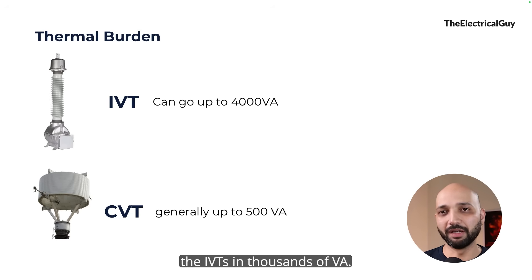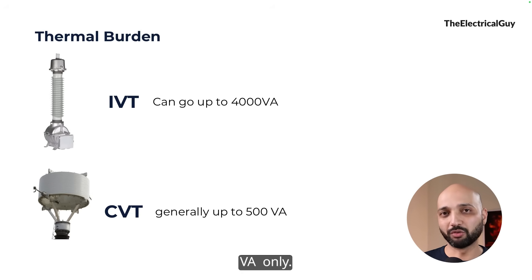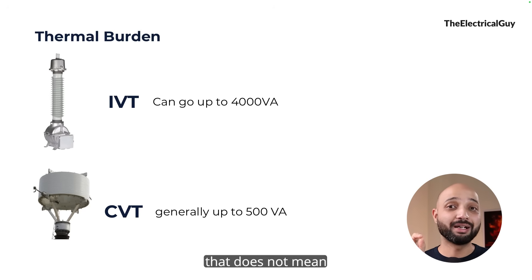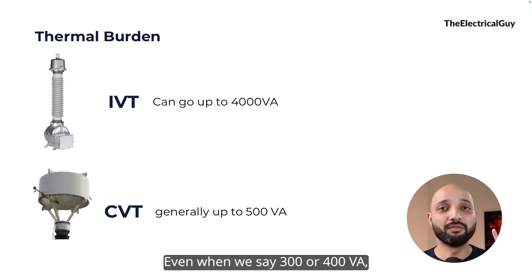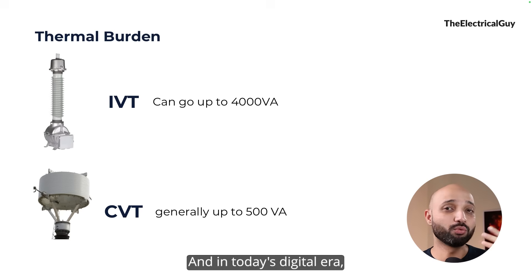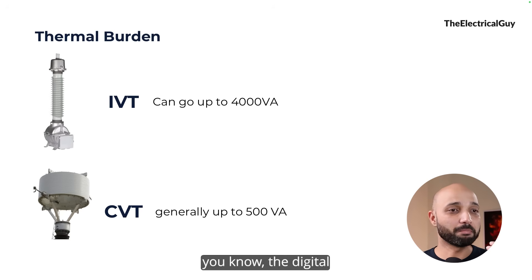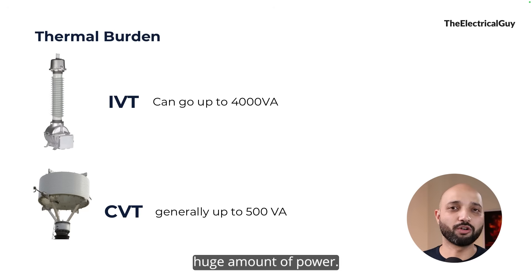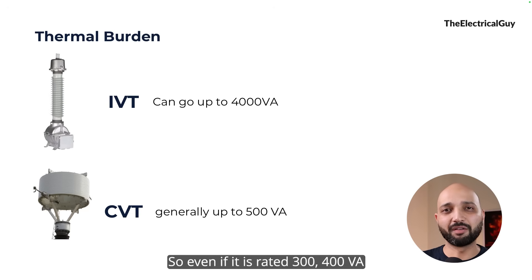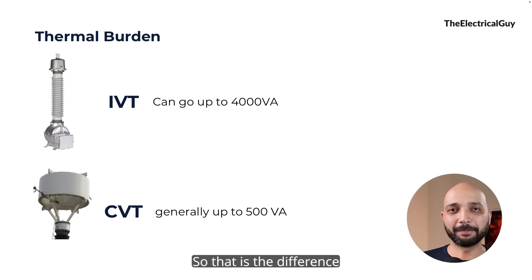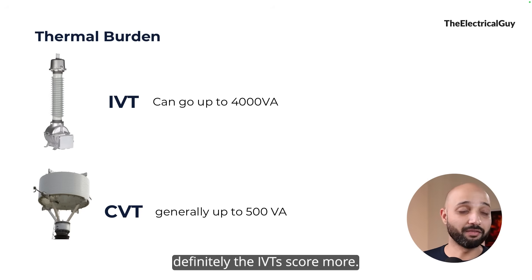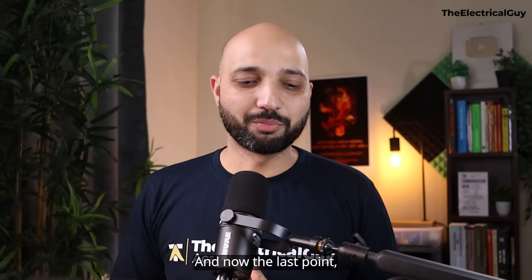Please note that a thermal burden of 300 to 400 VA from a CVT is not a limitation in practice. In today's digital era, digital relays and digital meters do not consume huge amounts of power, so 300 to 400 VA is generally sufficient. In terms of thermal burden, IVTs do score higher, but CVTs are perfectly adequate for modern applications.